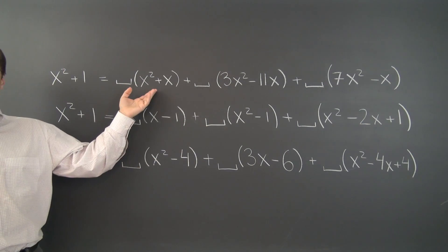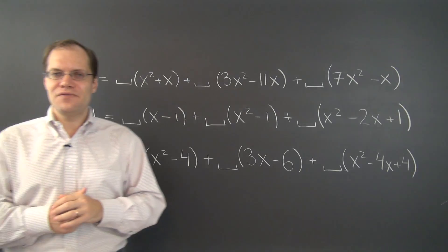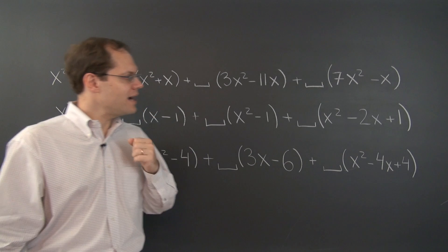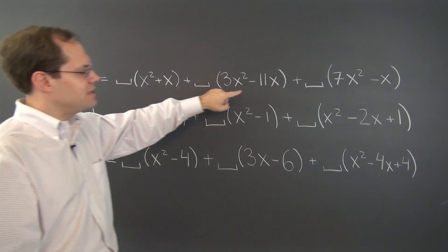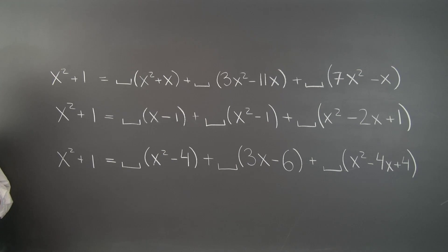We're going to start with the first one, which is actually the easiest, and I encourage you to pause the video and try and answer this question on your own. Why is it not possible to express the polynomial x squared plus 1 as a linear combination of these three decomposition polynomials?